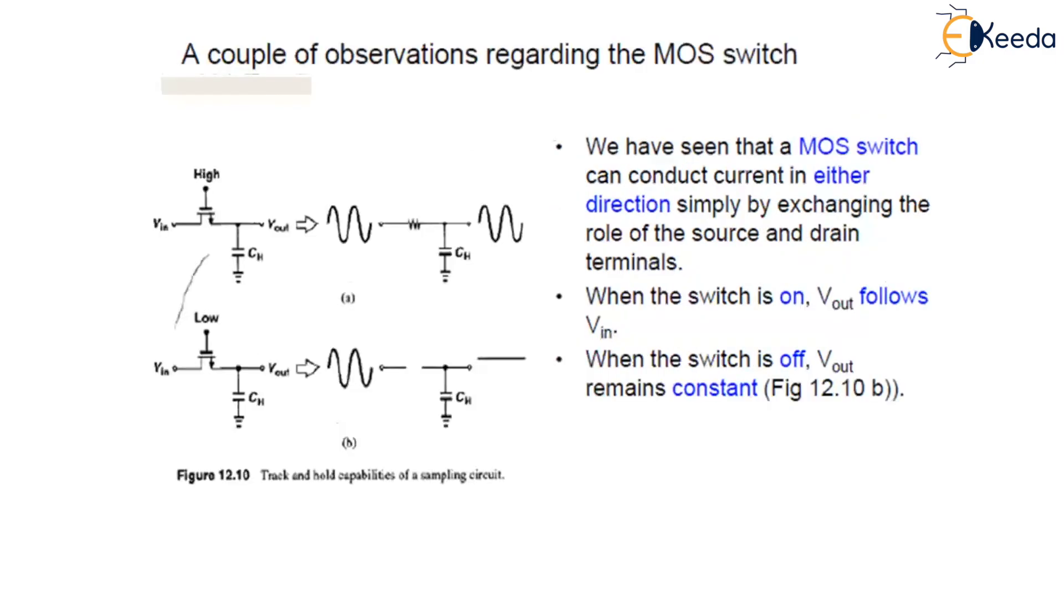The above observation reveals two important points. First, a MOS switch can conduct current in either direction only by exchanging the role of source and drain terminal. And secondly,